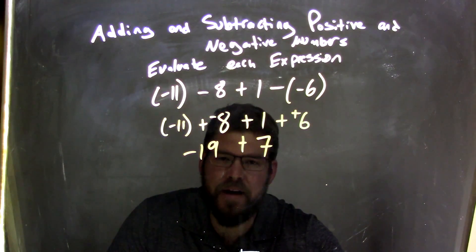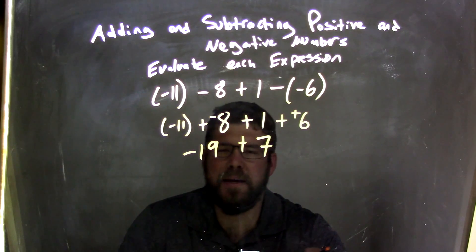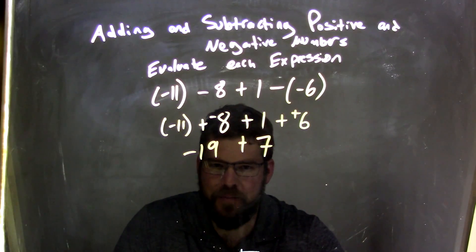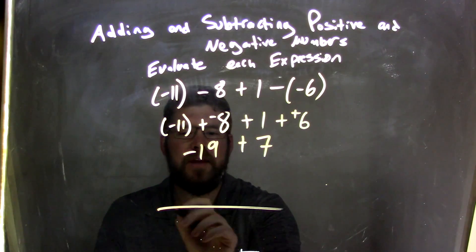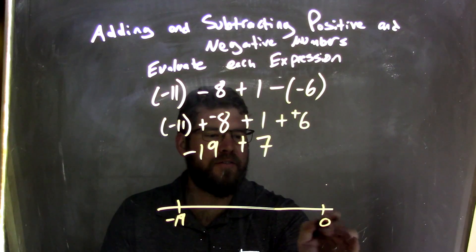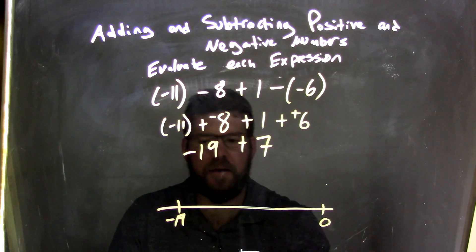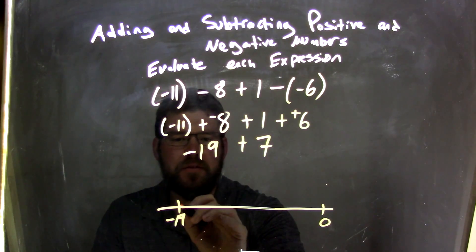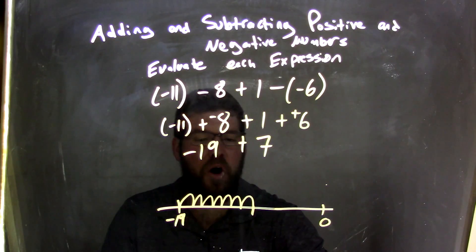So now I have negative 19 plus 7. What I want you to think about, this one's a little tricky, is how we can do this. We have negative 19 here on the number line, and somewhere here is 0. We need to move to the right 7 units. So we're moving to the right 7 units: 1, 2, 3, 4, 5, 6, 7. That's where we are.